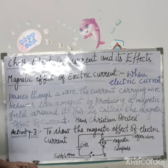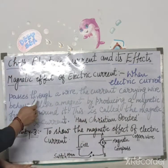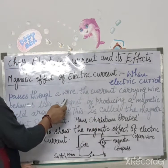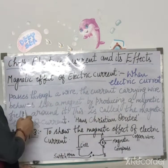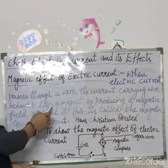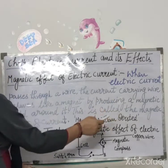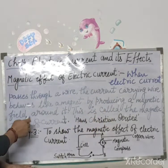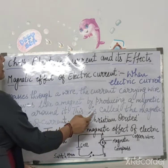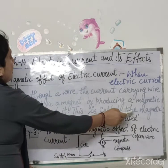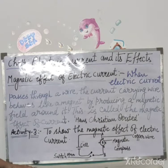To start karte hain — when electric current passes through a wire, the current carrying wire behaves like a magnet by producing a magnetic field around it. This is called the magnetic effect of current.